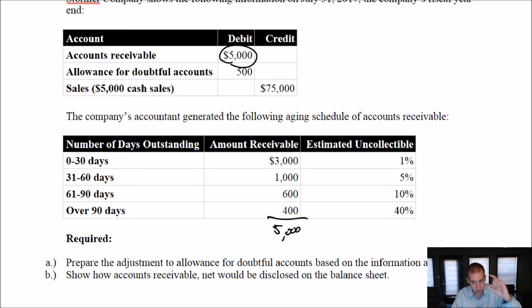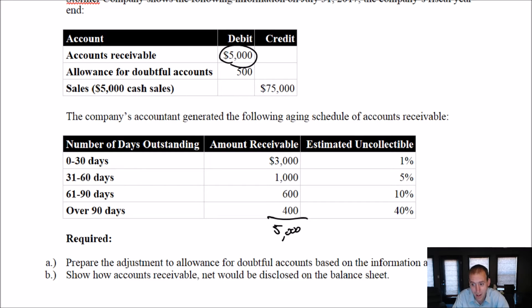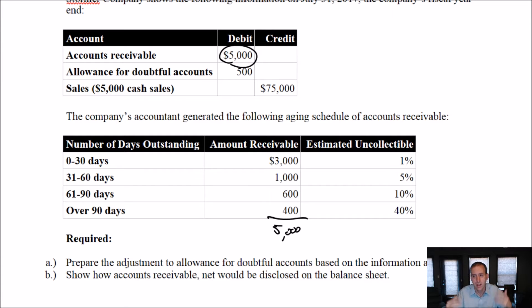If we believe anybody on that listing is not going to pay, we don't put them in the allowance — we just write them off. But if we see people in the listing that we're not sure about, we still hope and expect to collect from them, then they would be considered here. So our receivables that are zero to 30 days old — we have $3,000, which is most of our receivables.